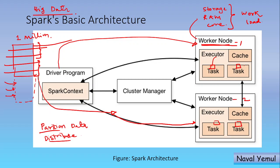Your data is now sitting across different locations — in different cores of different worker nodes. The user has submitted this Spark application, given the workload or data, and the driver program splits that data, partitions it, and distributes it to the different worker nodes.